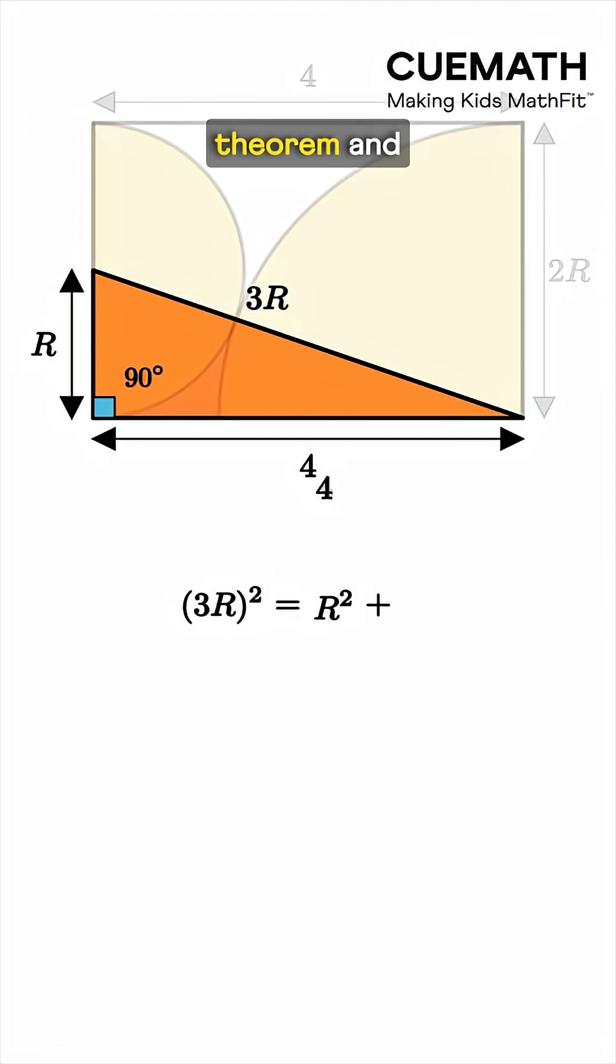Applying the Pythagorean Theorem and simplifying, we get r squared equals 2.